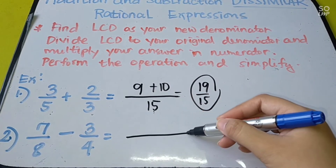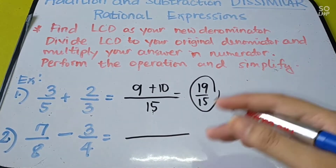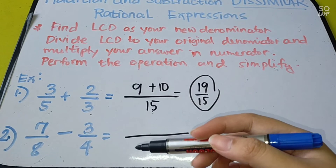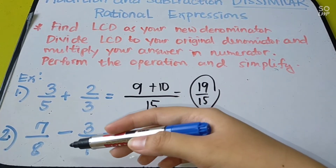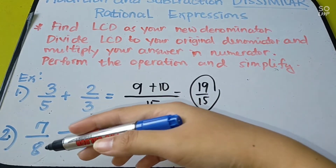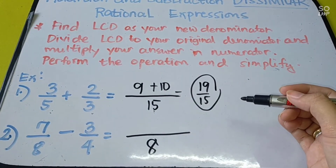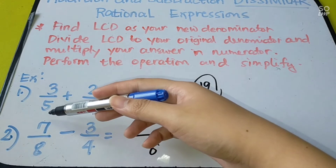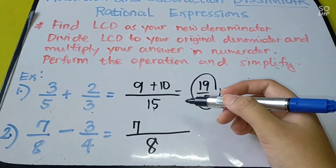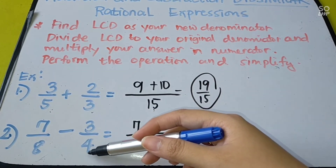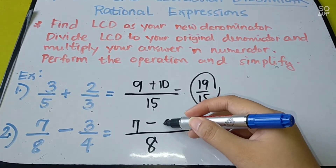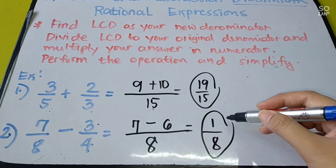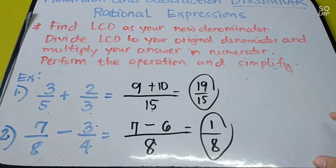Number 2: 7 over 8 minus 3 over 4. Since 8 and 4 are both divisible by 4, the LCD is the highest number, which is 8. Divide: 8 divided by 8 is 1; 1 times 7 is 7. Then 8 divided by 4 is 2; 2 times 3 is 6. So 7 minus 6 is 1 over 8.